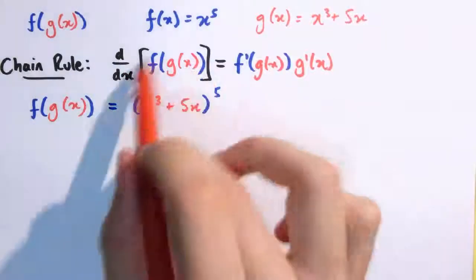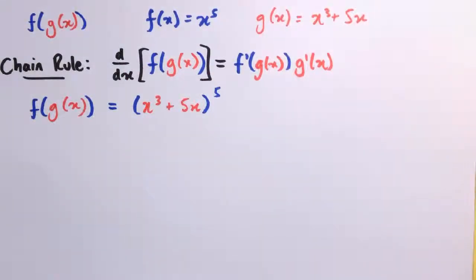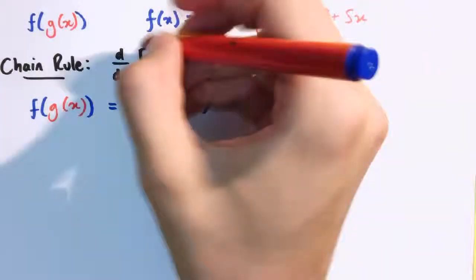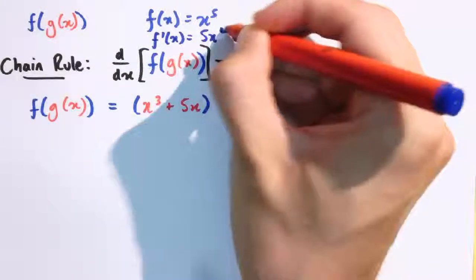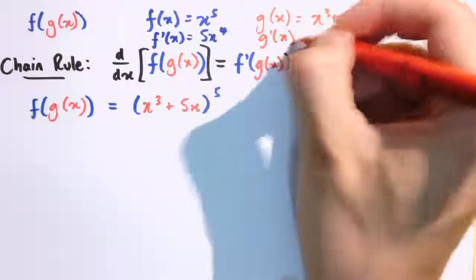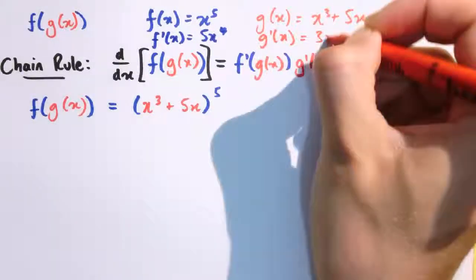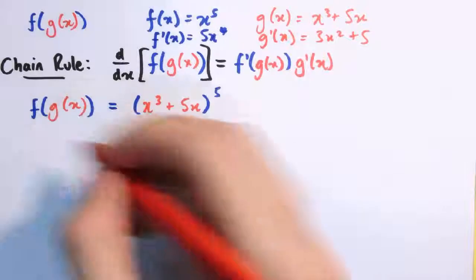To be able to apply the chain rule, we need to be able to differentiate each of the individual functions f and g. Here we can do that: f dash of x, differentiating x to the 5, gives us 5x to the 4, and g dash of x gives us 3x squared plus 5.